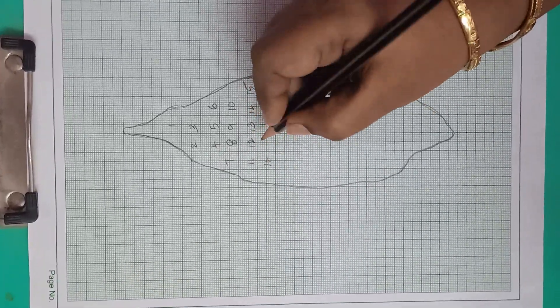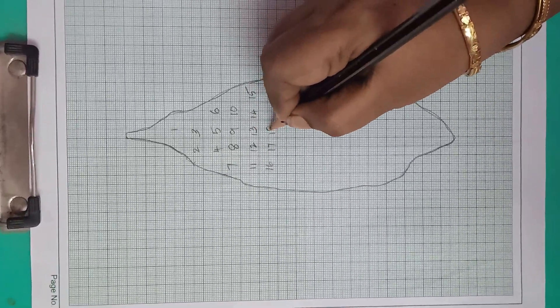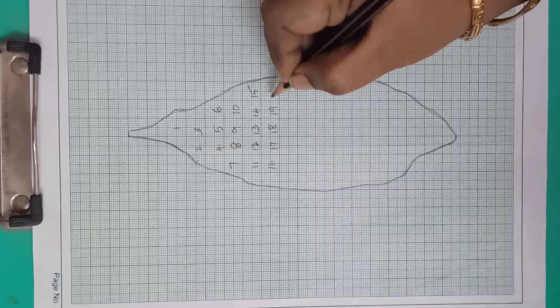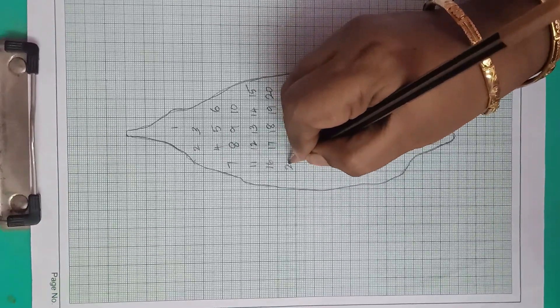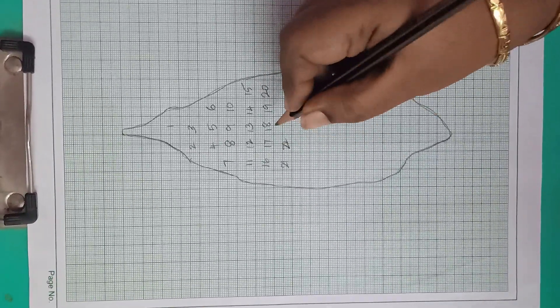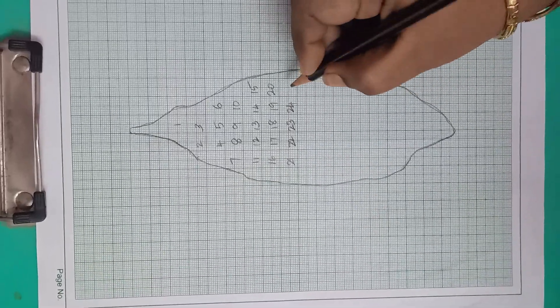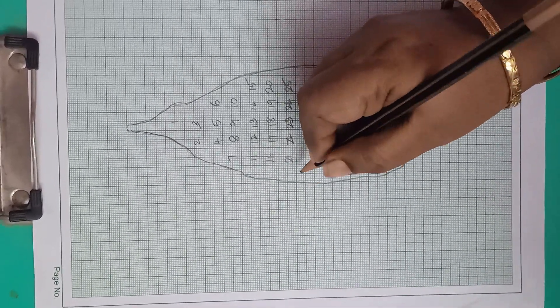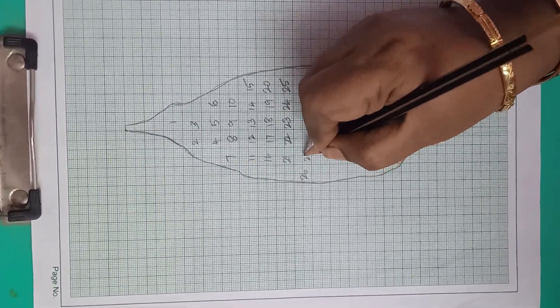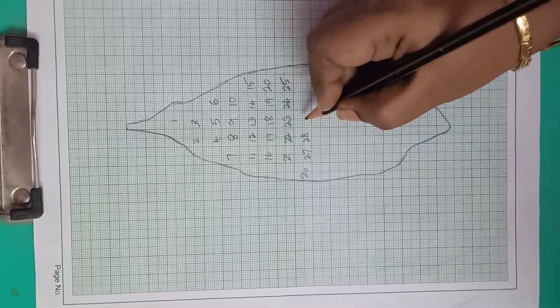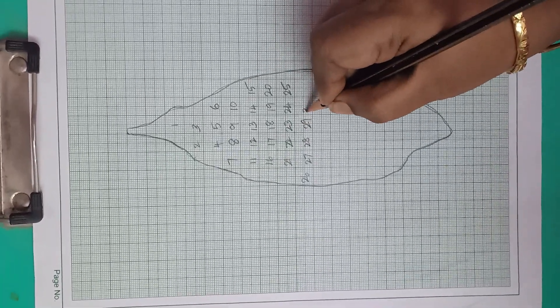16, 17, 18, 19, 20, 21, 22, 23, 24, 25, 26, 27, 28, 29, 30.